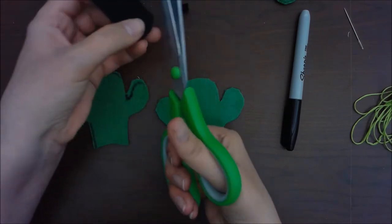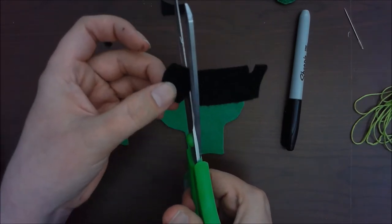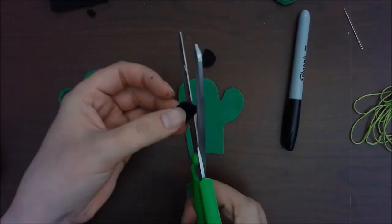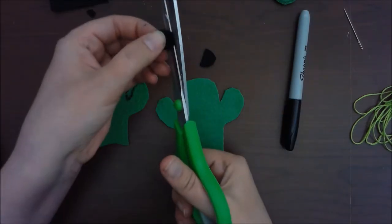So taking a piece of the black felt, I am going to cut out two eyes. And you can make these as big or as small as you want to.